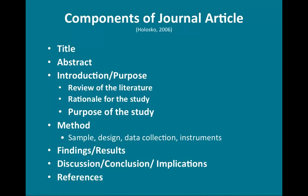I want to spend some time on the components of a scholarly journal article. There's always a title, an abstract, and an introduction. A review of the literature usually comes near the beginning, along with the purpose of the study. Then comes the methodology — what was done, how data was collected, sample size, instruments used — followed by the findings and results, a lot of statistical content, the discussion interpreting those findings, implications or ideas for future research, and an extensive reference page.